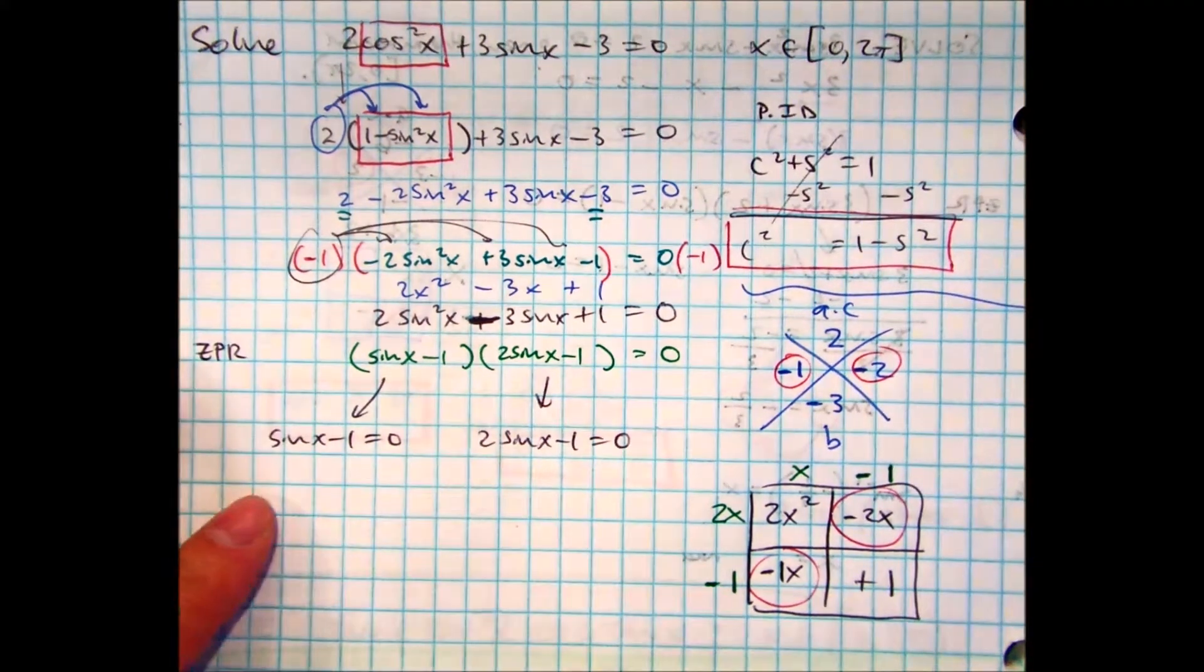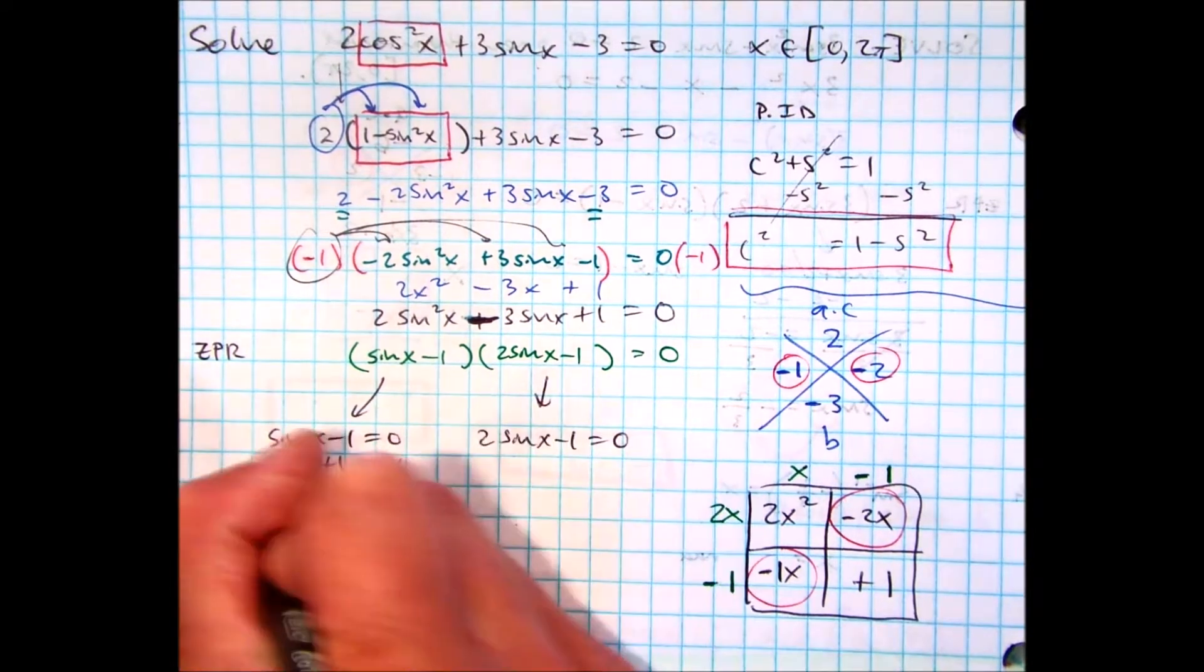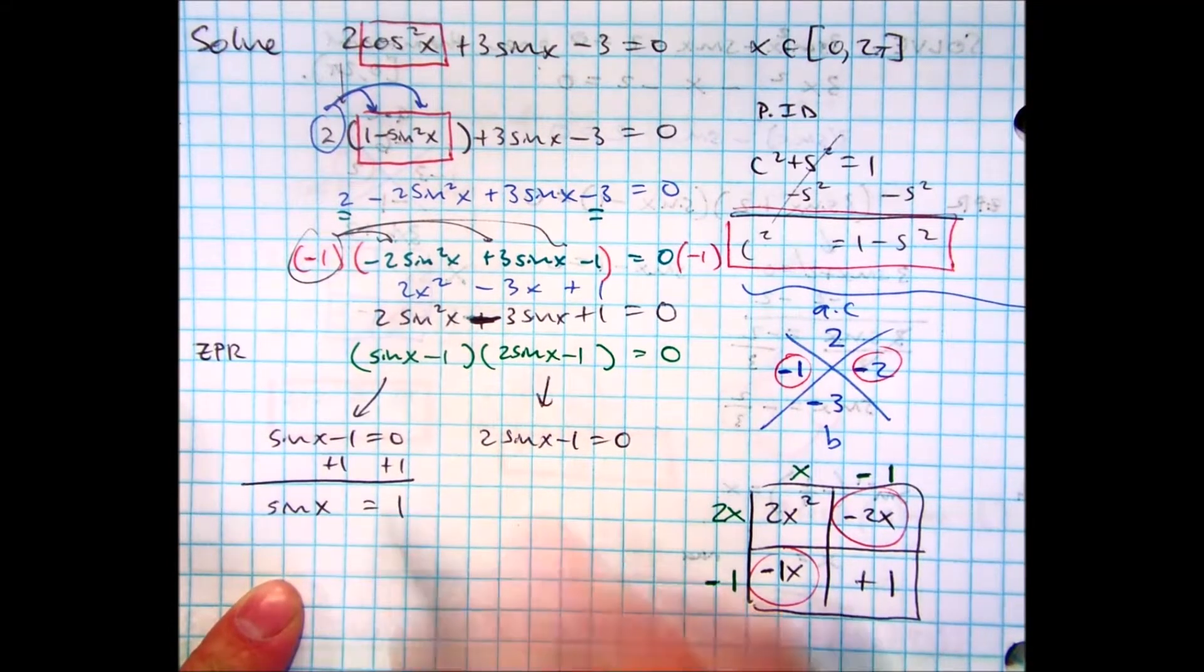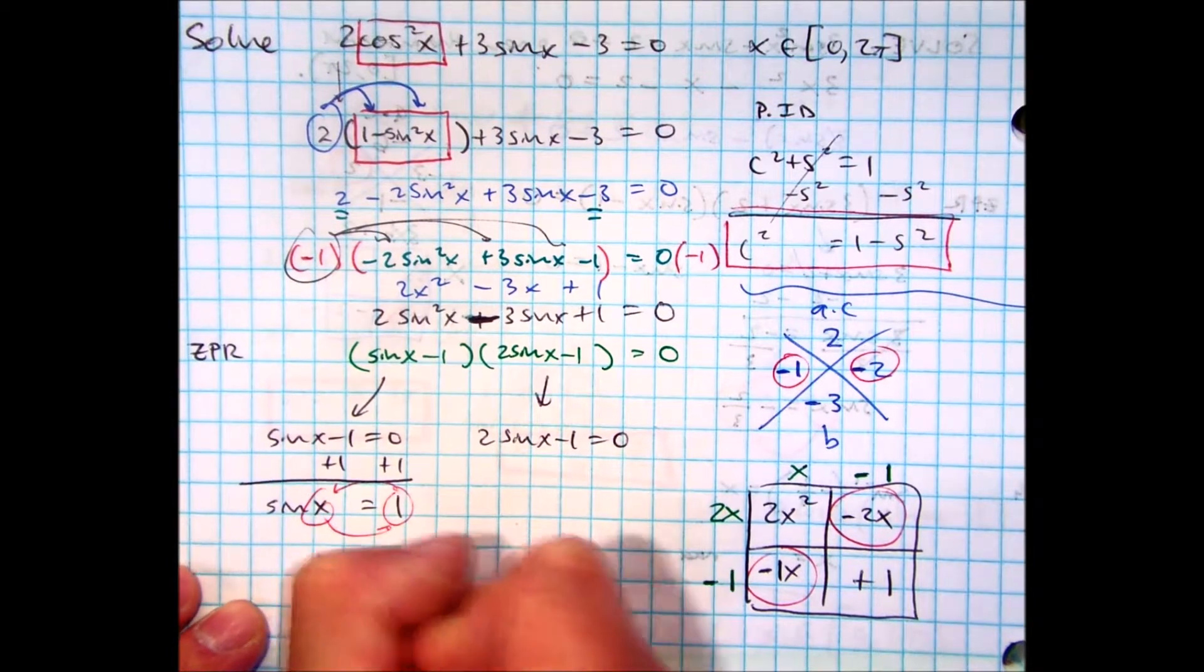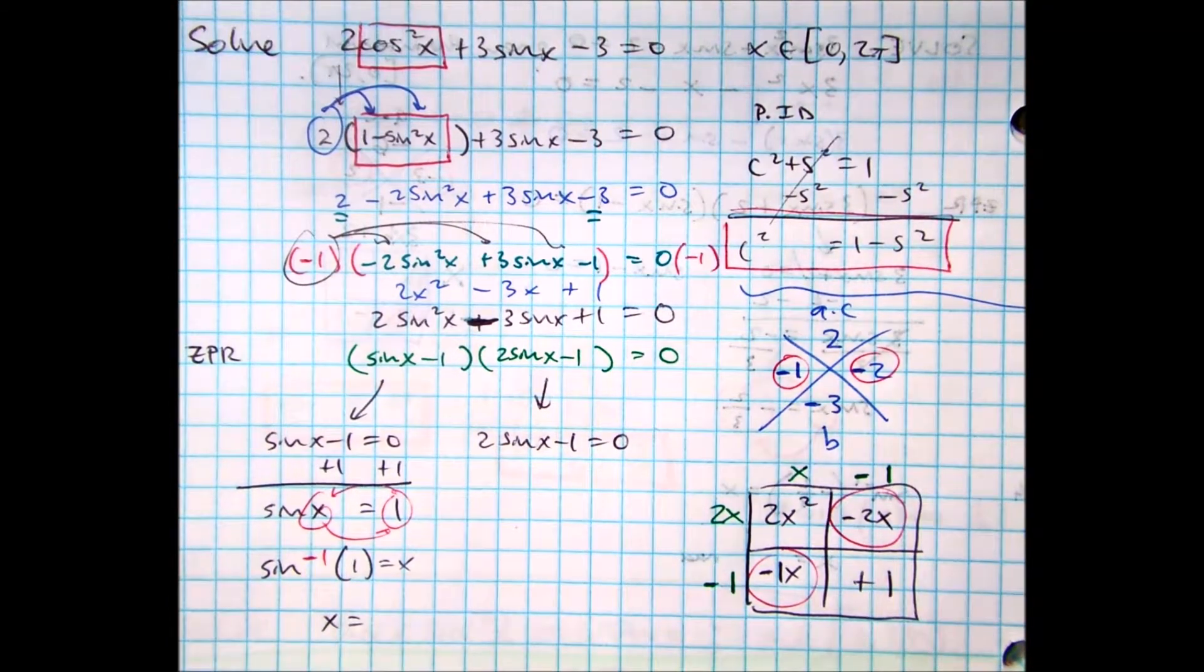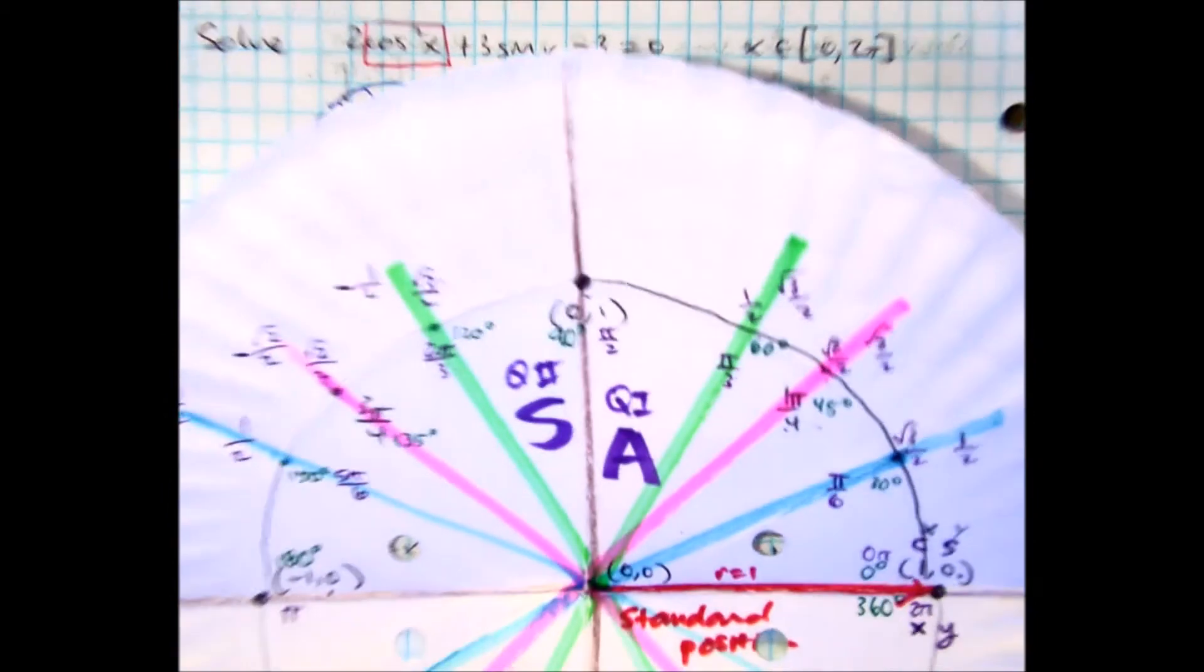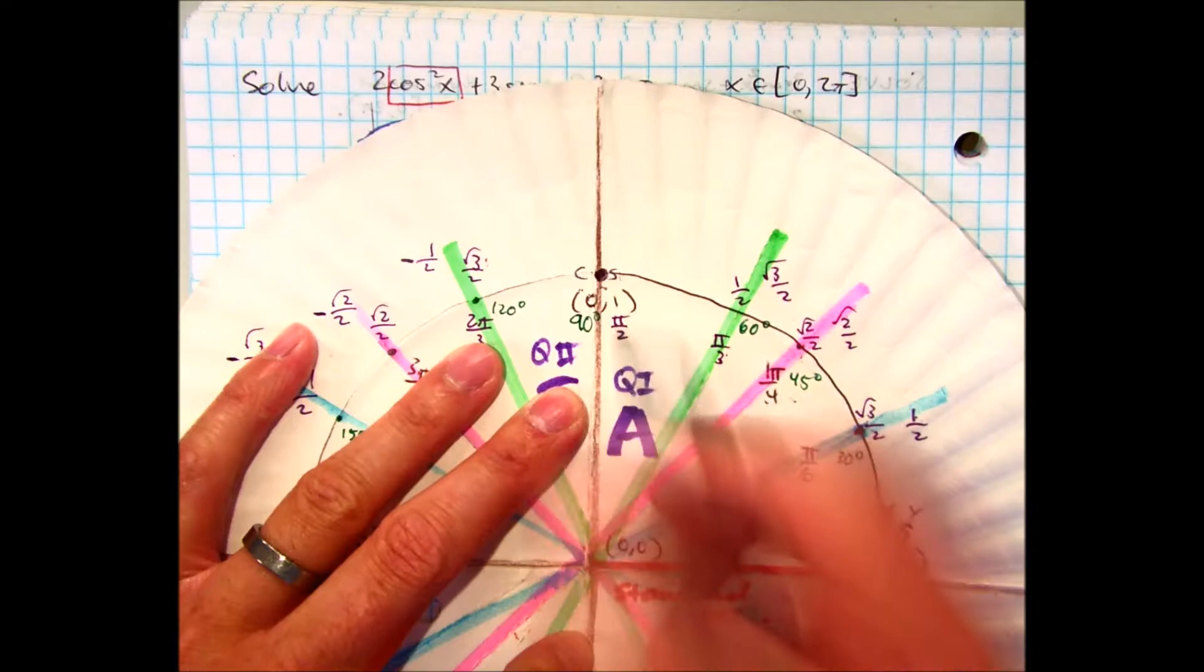Let's solve this one over here. How do I do that? What's left? So let's take the inverse. So, I have the inverse of sine of 1 equals x. On my unit circle, where is sine equal to 1? Only one location, right? Pi over 2.